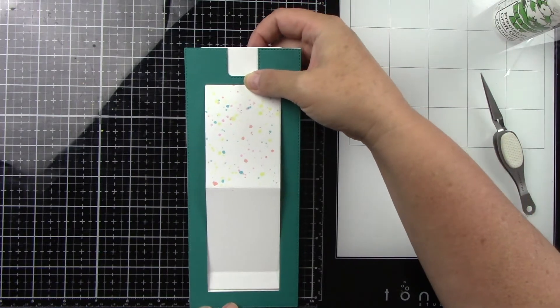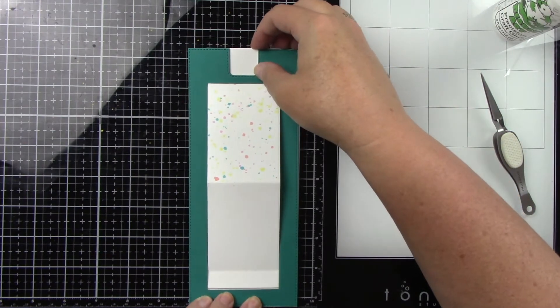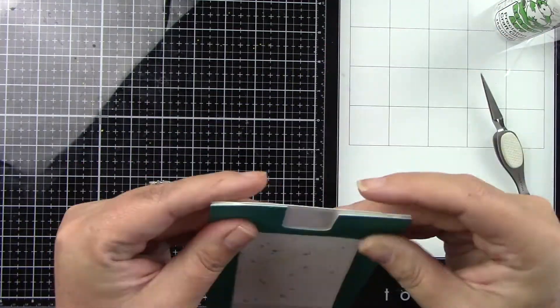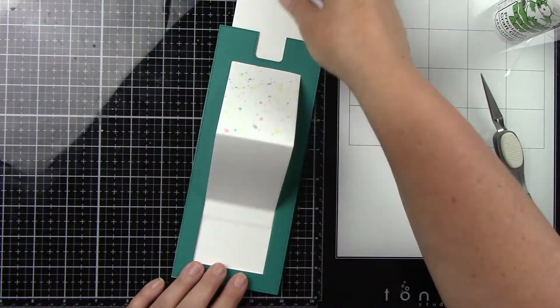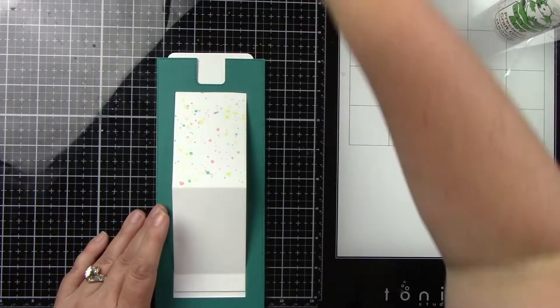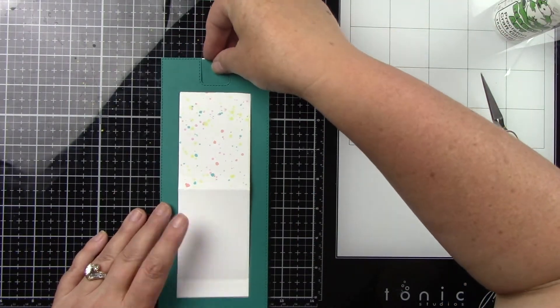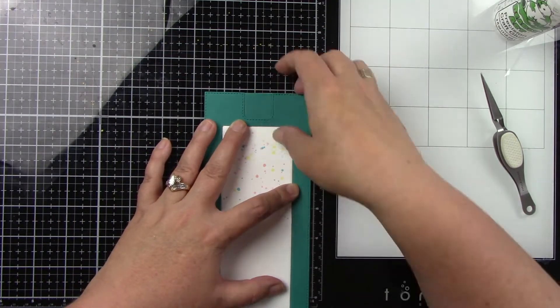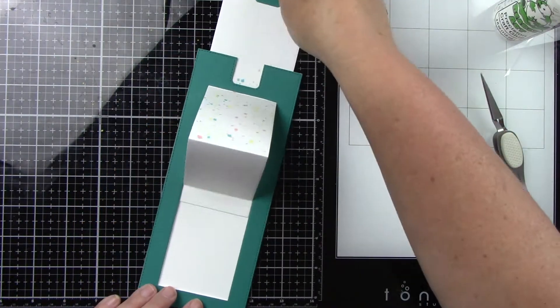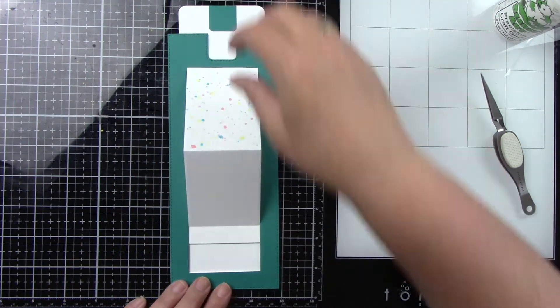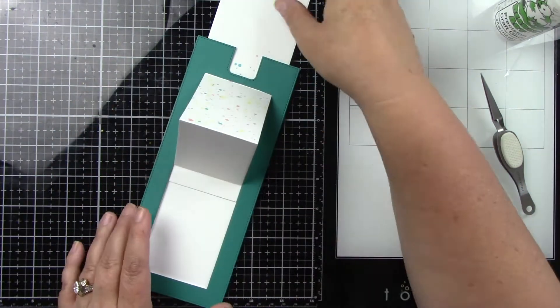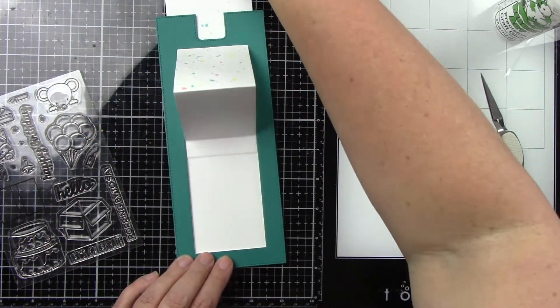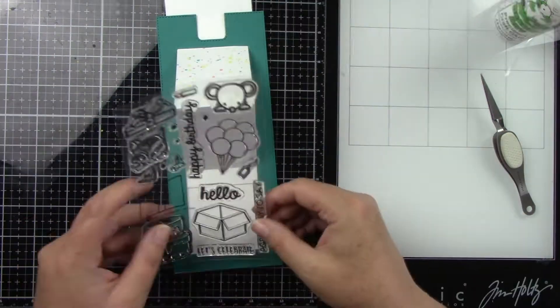Let's adhere this to the slimline card base. I just added glue only to those strips we added on the side and the bottom. We can adhere that down and then you can pull that tab up and reveal another stamped image or sentiment. You can just pull that up, and it's so easy and super cute.